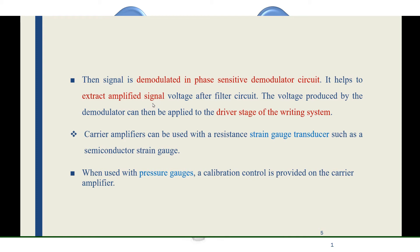Demodulation takes place in the second stage, and after that the signal is recorded using the driver stage of the writing system. There are two types of transducers we can use: the first is a strain gauge transducer and the second is a pressure gauge transducer. If a pressure gauge transducer is used, we have to apply calibration control.